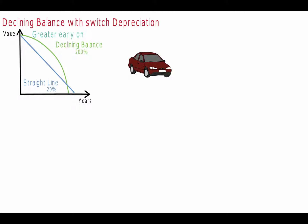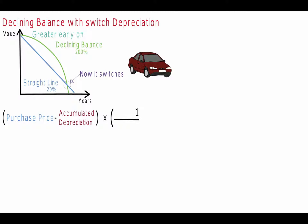Therefore, initially, the declining balance depreciation exceeds the straight line depreciation value. Once the straight line depreciation value exceeds the declining balance depreciation value, a switch is made to the straight line calculation. Annual depreciation is calculated as the original cost minus the accumulated depreciation, multiplied by 1 over the number of estimated useful years, multiplied by the declining rate.